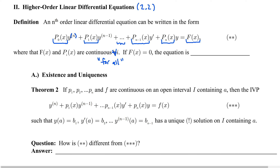Observe the notation of the higher-order derivatives: whenever the exponent is in parentheses, that indicates the order of the derivative, not a power. Just as before, if f(x) equals zero, then the equation is homogeneous. This is related to the earlier definition, with the only difference being that we're looking at an nth-order rather than a second-order linear differential equation. Our goal is to learn how to solve a higher-order linear differential equation, but first we need to know whether a solution even exists.